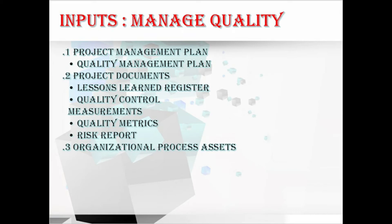The next input is organizational process assets (OPA). In OPA, we have the organizational quality management system, which includes policies, procedures, and guidelines, as well as quality templates including checksheets, traceability metrics, test plans, test documents, and others. We also have results from previous audits and the lessons learned register with information from similar projects.